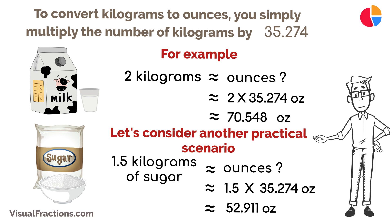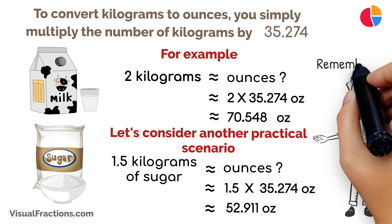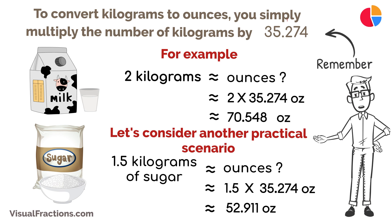And there you have it. Converting kilograms to ounces is a simple process. Remember, one kilogram equals approximately 35.274 ounces. With some practice, you'll find these conversions easy to do, helping you adapt to different weight measurements with ease.